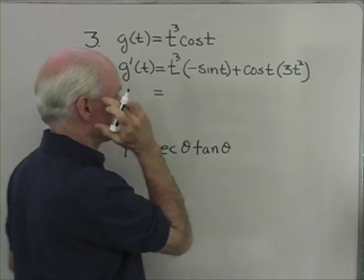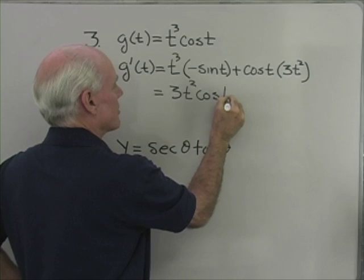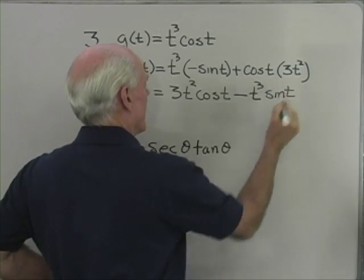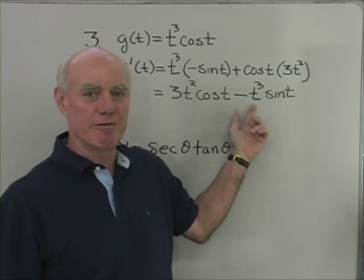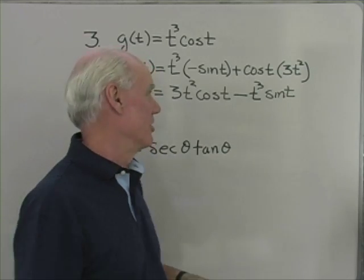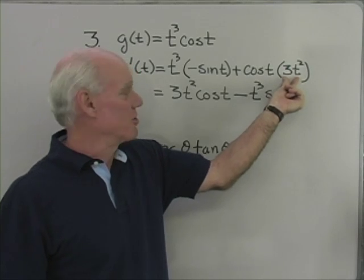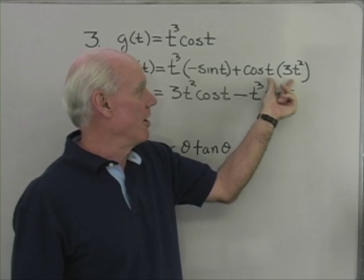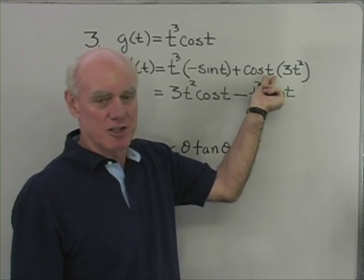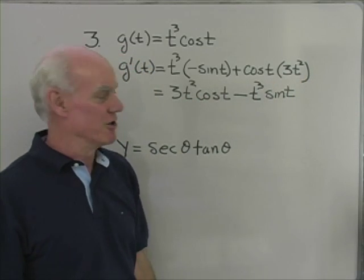Let's simplify a little bit. I'll write this as 3t squared cosine t — taking the positive term first — minus t cubed sine t. If I wanted to, I could factor out t squared from each term. I like to write the positive term first. I also prefer to write 3t squared out in front as a coefficient so I don't mistake it for being the argument of cosine. The argument of this function is just t, and cosine t is multiplied by 3t squared.